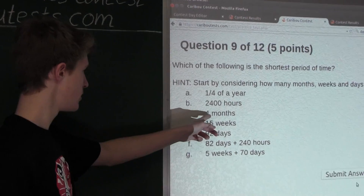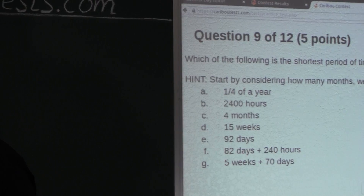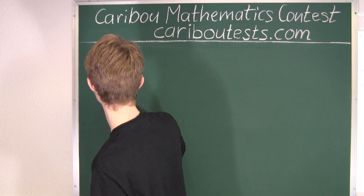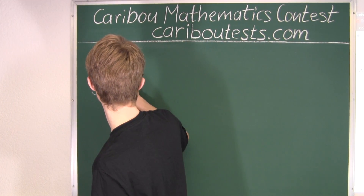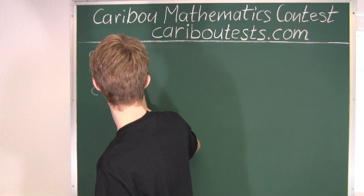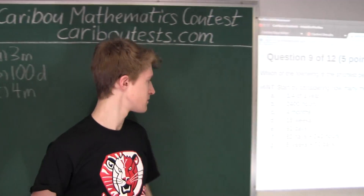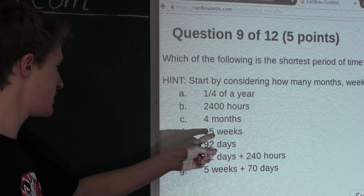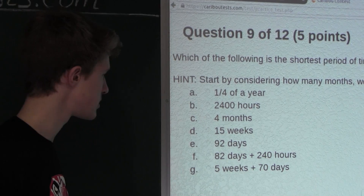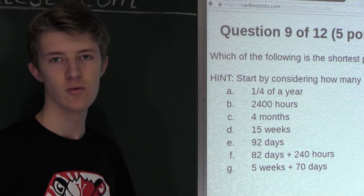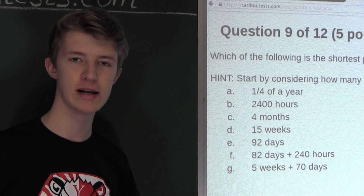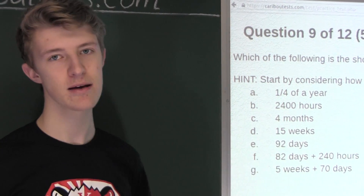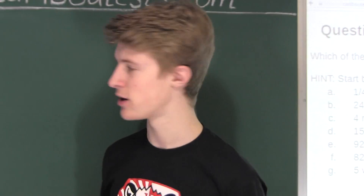Option C: 4 months — we will leave it as 4 months. Option D: 15 weeks. Let's put this in days. We know that one week has 7 days, so 15 times 7 is 105 days.